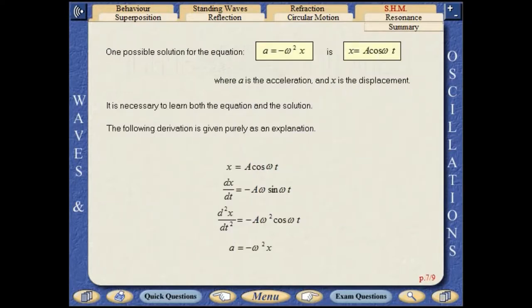One possible solution for the equation a equals minus omega squared x is x equals a cos omega t, where a is the acceleration and x is the displacement. It is necessary to learn both the equation and the solution. The following derivation is given purely as an explanation.